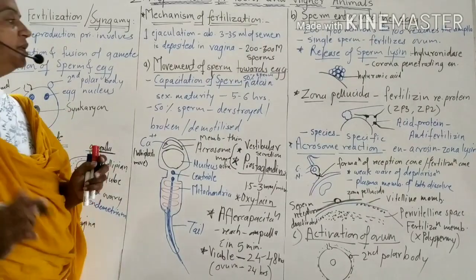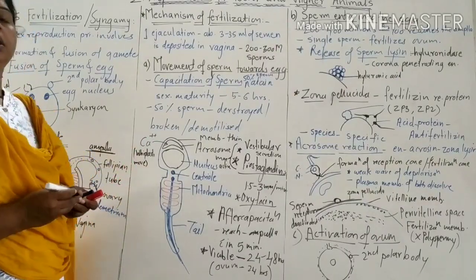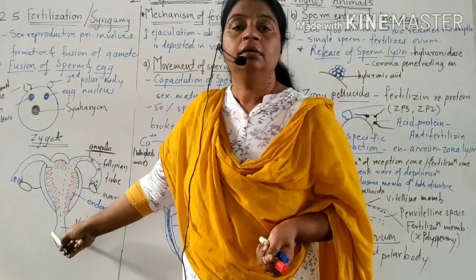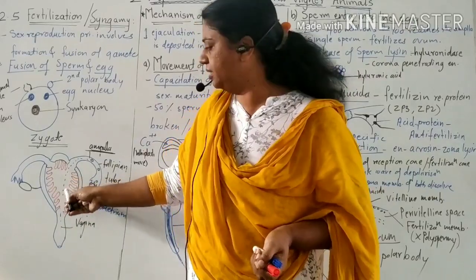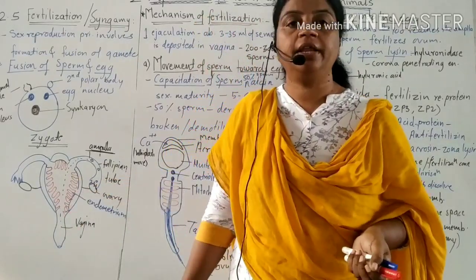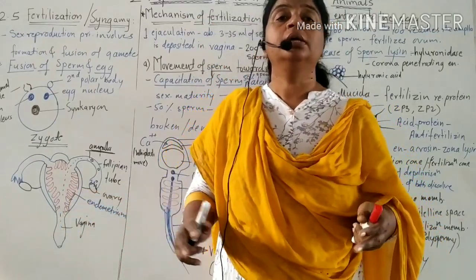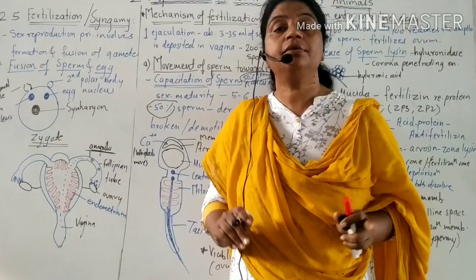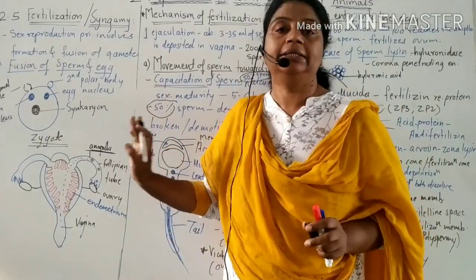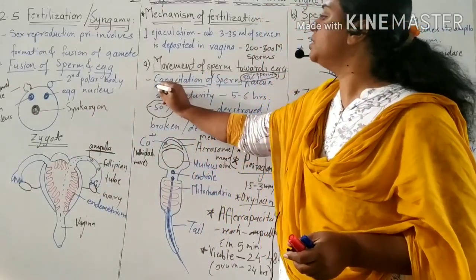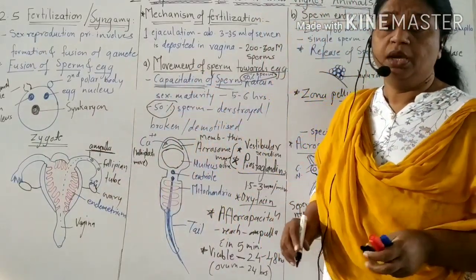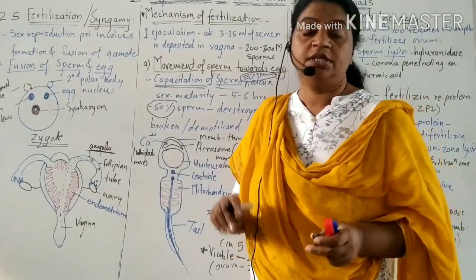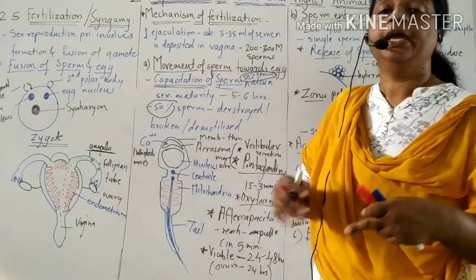This movement of sperm towards the egg is not simple. Here the sperms undergo capacitation. There is a highly acidic condition and a number of barriers. These infoldings of the endometrium, acidic conditions, and all barriers demobilize and destroy 50% of sperm. Only 50% of sperm get capacitation. Capacitation means sexual maturity attained by sperm.